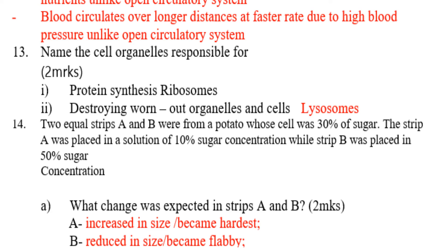Question number fourteen: two equal strips A and B were cut from a potato whose cell sap was 30% sugar. Strip A was placed in a solution of 10% sugar concentration. What changes were expected in strip A and B? Strip A: increased in size and became hard, because the external solution is less concentrated. Strip B: reduced in size and became flabby.